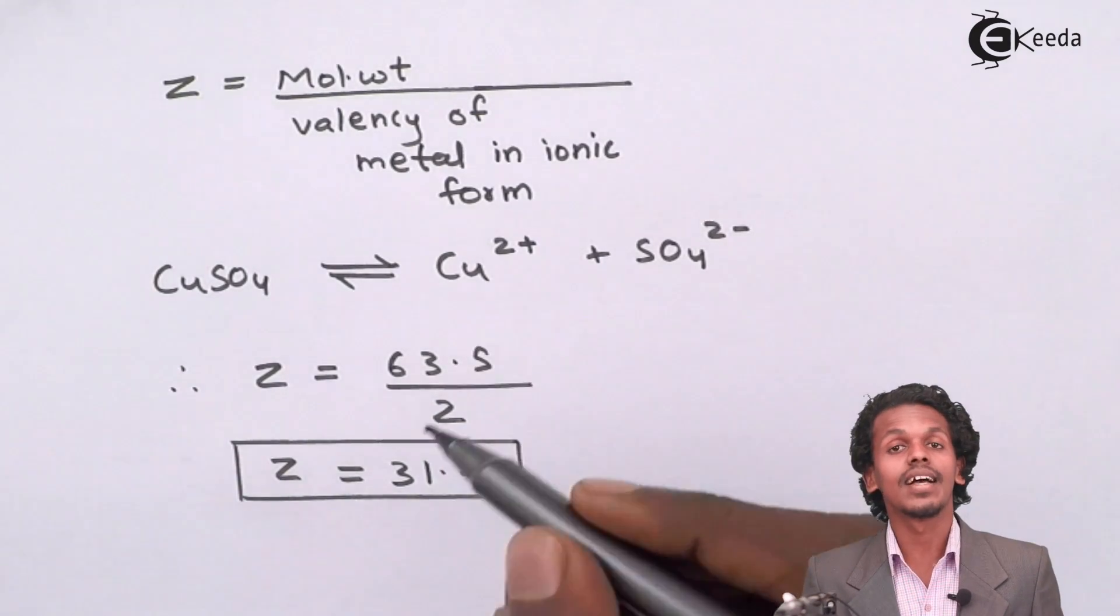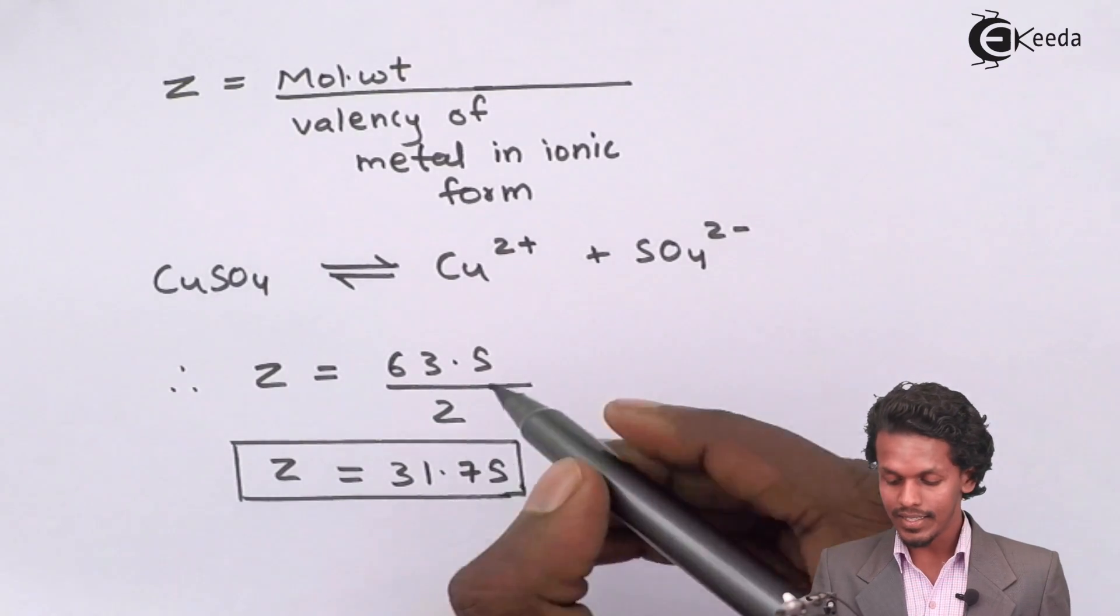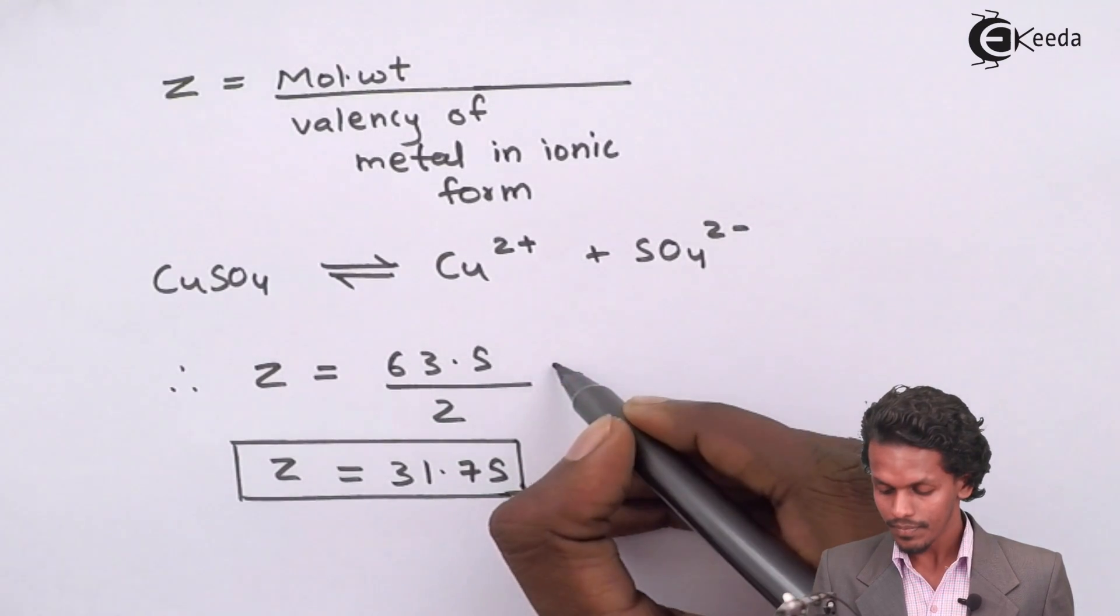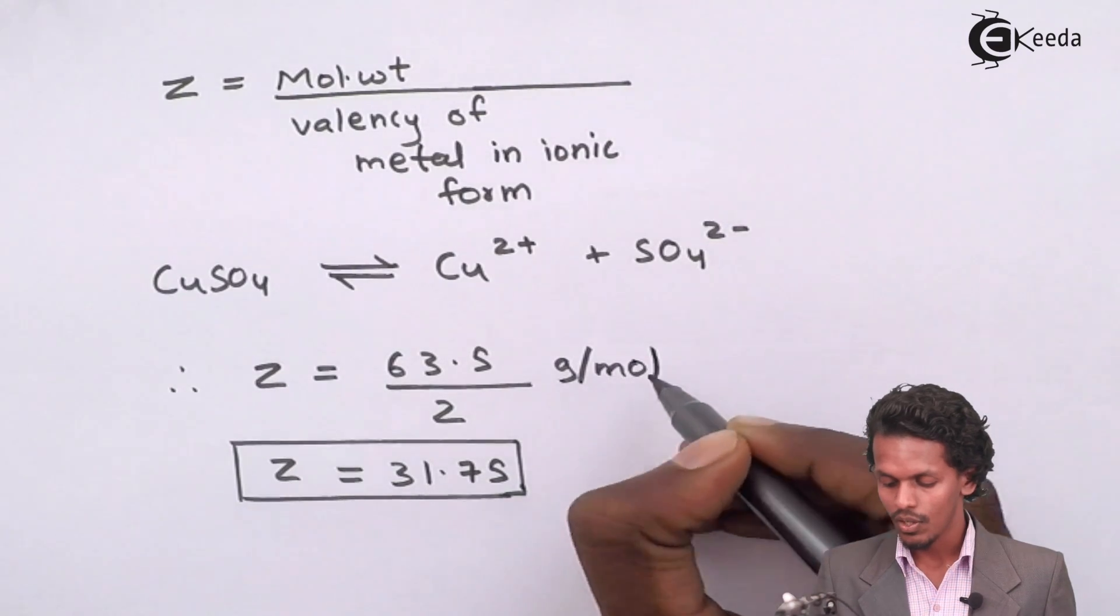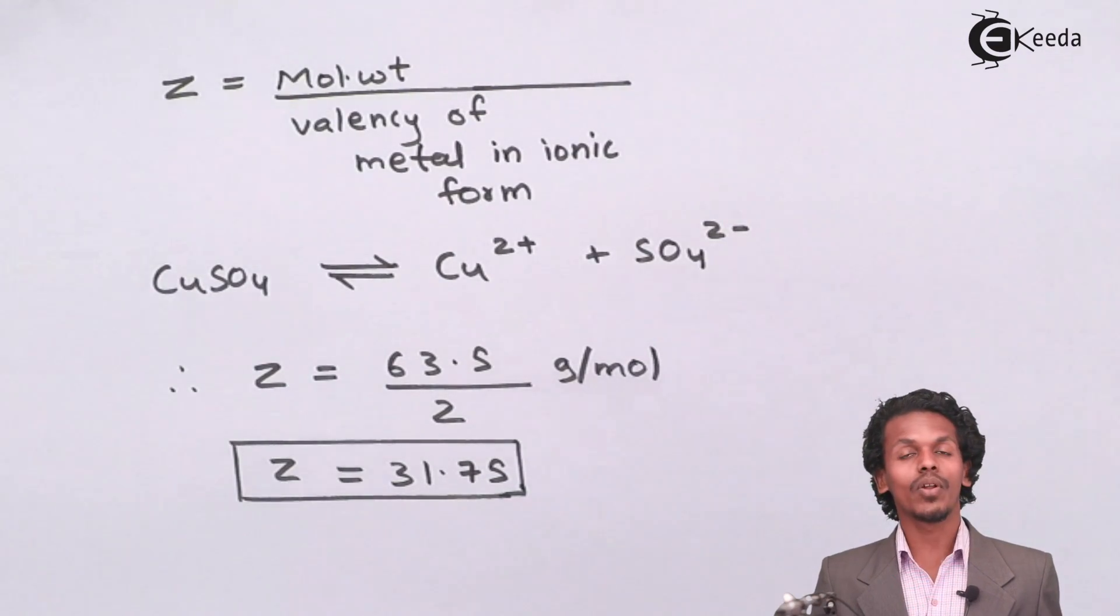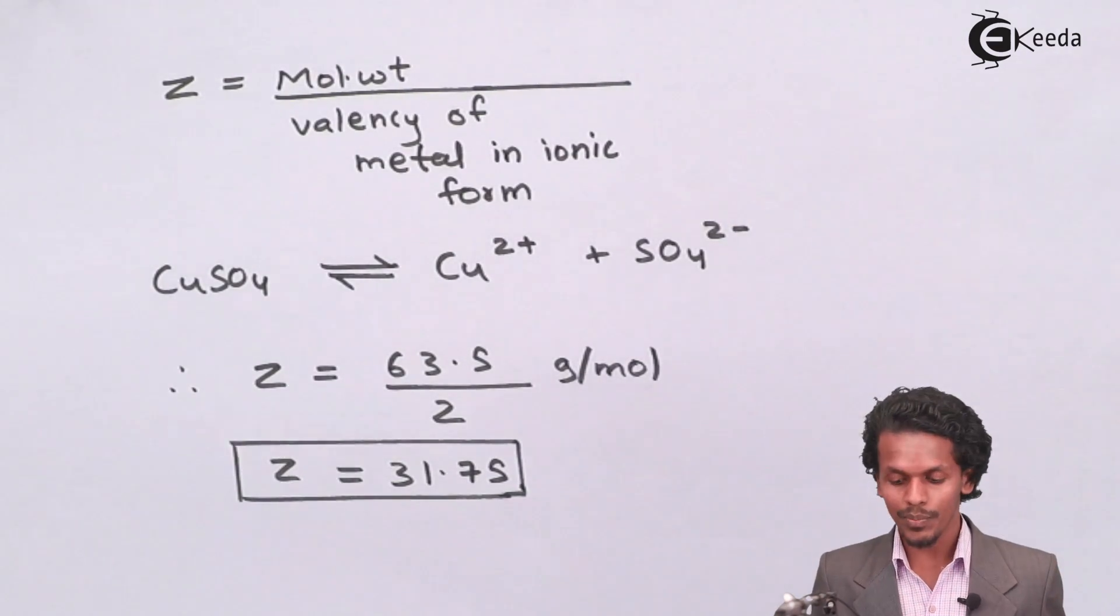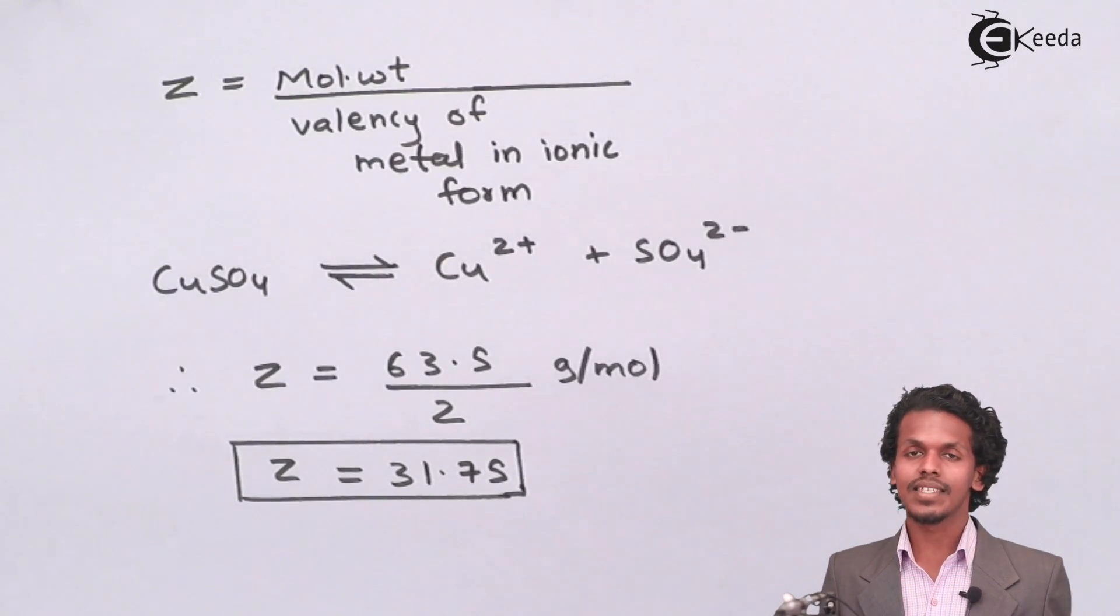This is the value of equivalent weight we have got. The molecular weight has a unit of gram per mole, so similarly the equivalent weight Z will also be gram per mole, since it is divided by the valency, which is just a number.